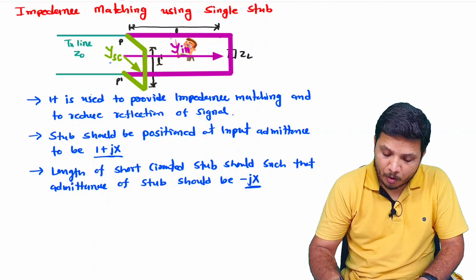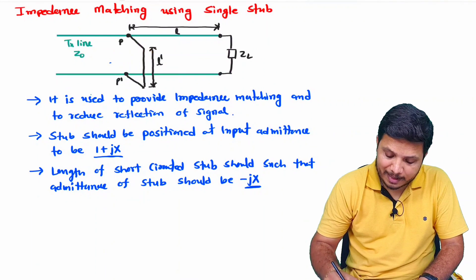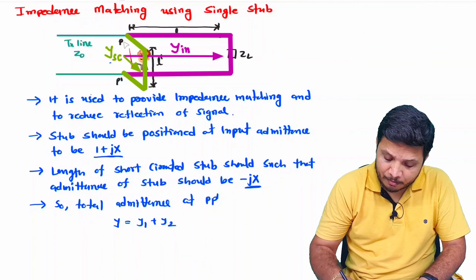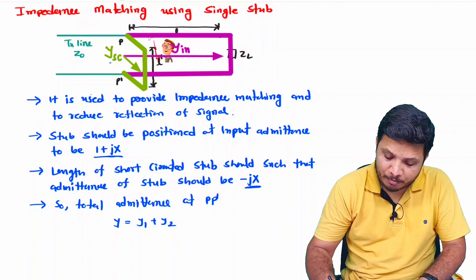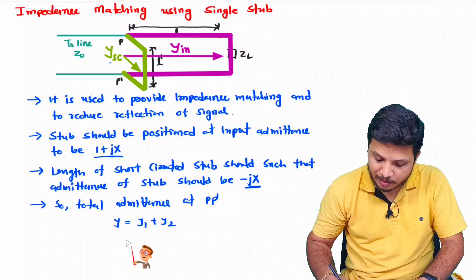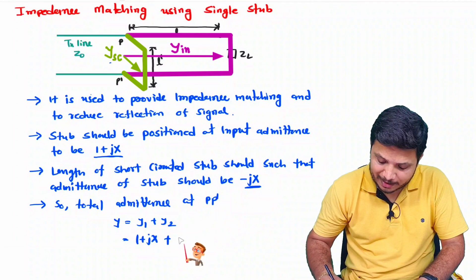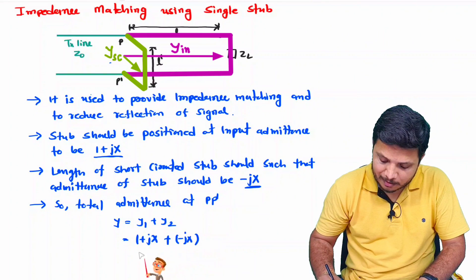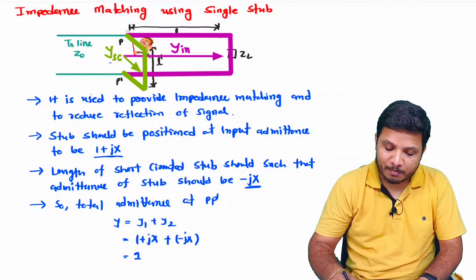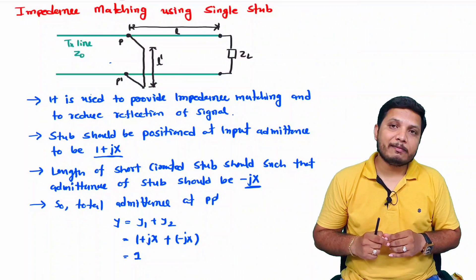Both the transmission line and the stub are in parallel to each other. So the total admittance at PP' is the sum of both. In parallel, admittances add: Y1 = 1 + jx and Y2 = minus jx. So the normalized admittance is 1. If the normalized admittance is 1, there is perfect impedance matching.